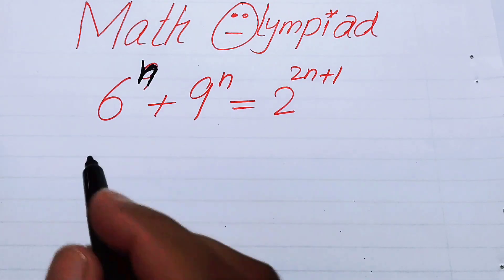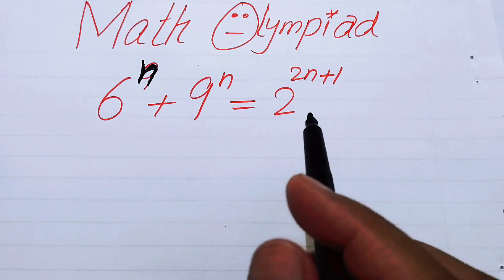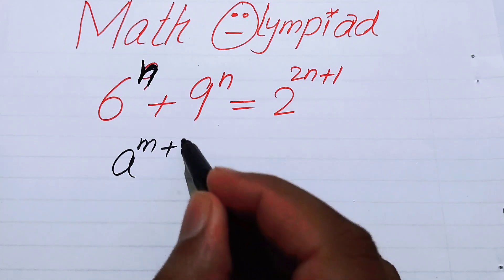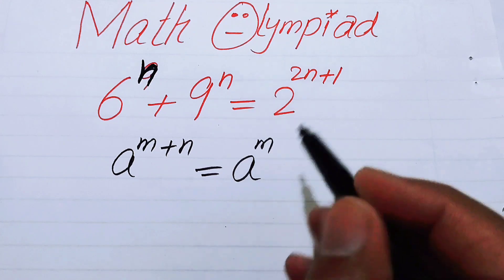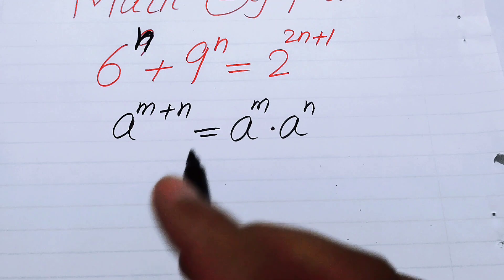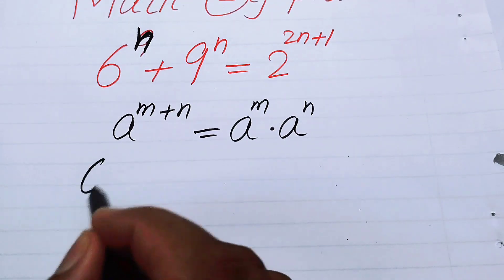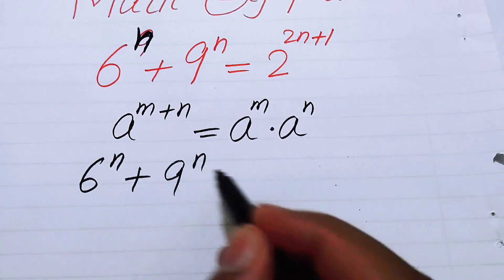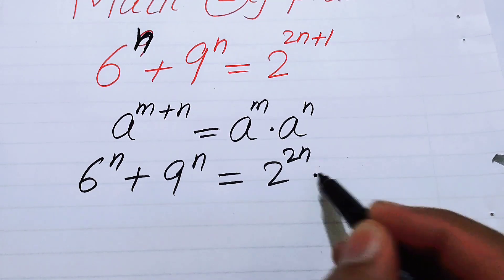The very first thing we are going to do is focus on the right hand side and apply the exponential law. You know that a to the power of m plus n equals a to the power of m times a to the power of n. We will use this law on the right hand side, so it becomes 6 to the power of n plus 9 to the power of n equals 2 to the power of 2n times 2 to the power of 1.